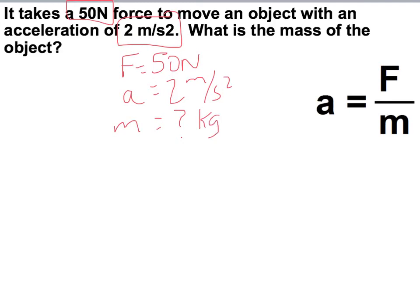So let's go ahead and plug in our values. 2 meters per second squared equals 50 Newtons over the mass. Now what do we have to do?